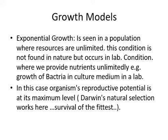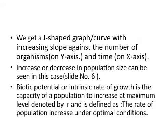In this case the organism's reproductive potential is at its maximum level, that is why Darwin's natural selection works here, and due to this natural selection, survival of the fittest is the final result. We get a J-shaped graph or curve with increasing slope, with number of organisms on the y-axis and time on the x-axis.